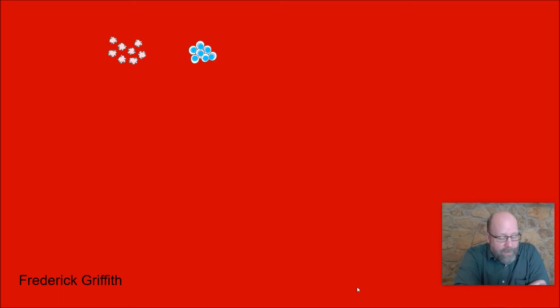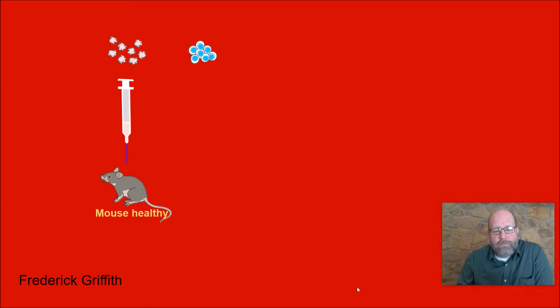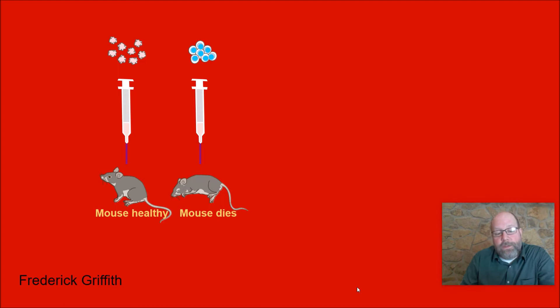Then we get to Frederick Griffith, who did an interesting experiment. He had two different strains of bacteria — one deadly, one harmless — but they're related bacteria. He found that if you inject the rough-colony strain into mice, the mice are totally healthy; their immune system knocks it out. But the smooth-colony bacteria, when injected into mice, kills them.